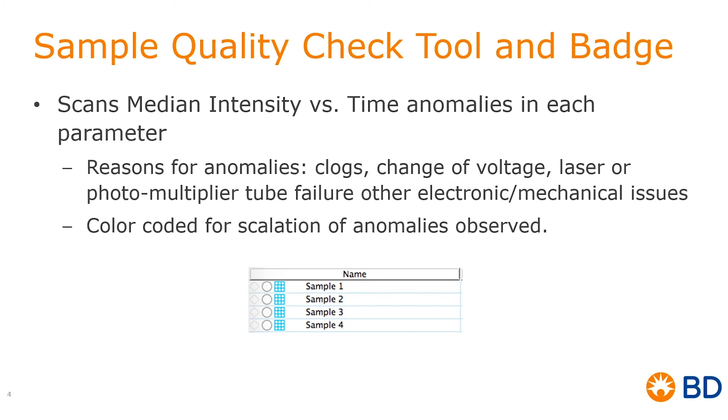So first, the sample quality check tool and badge that are native to the workspace. What does it do? It scans median intensity versus time and checks for anomalies in each parameter. The reasons for these anomalies could be due to clogs, change of voltage, laser,